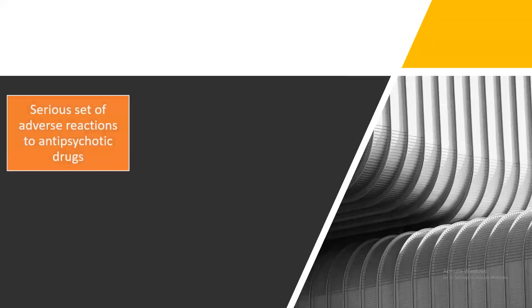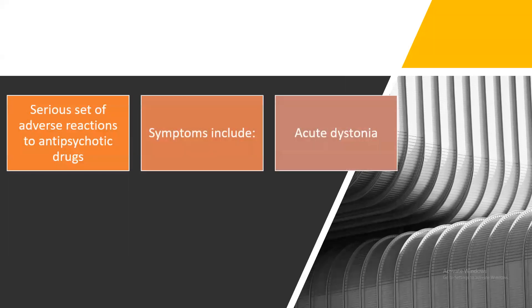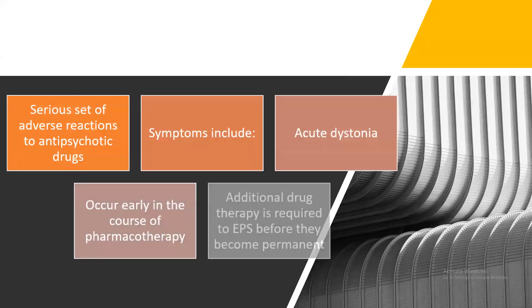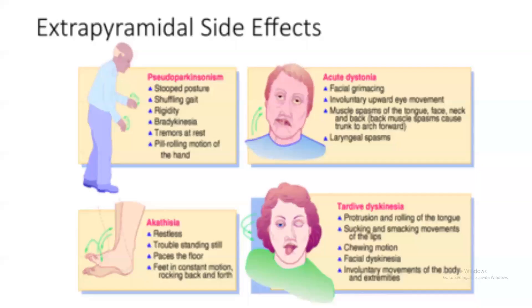Extrapyramidal side effects (EPS) are a serious set of adverse reactions to antipsychotic drugs. Symptoms include acute dystonia, which occurs early in pharmacotherapy. Pseudo-Parkinsonism symptoms include stooped posture, shuffling gait, rigidity, bradykinesia, tremors at rest, and pill-rolling motion of the hand.